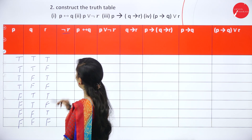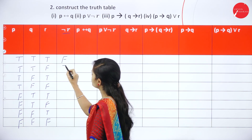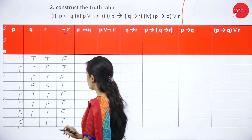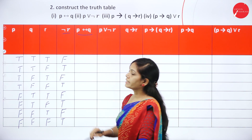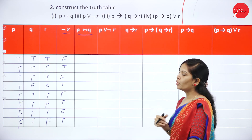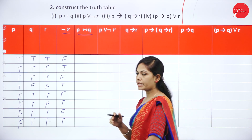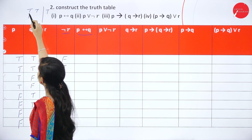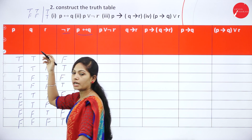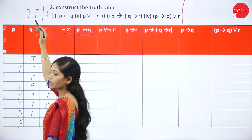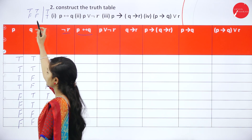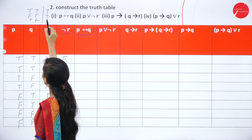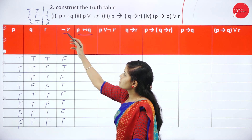Find negation R: true changes to false and false changes to true. Next find P ↔ Q (P biconditional Q, meaning P if and only if Q). The truth table for biconditional: if both statements are true it is true; if both are false it is true; otherwise it is false. So true ↔ false = false, and false ↔ true = false.